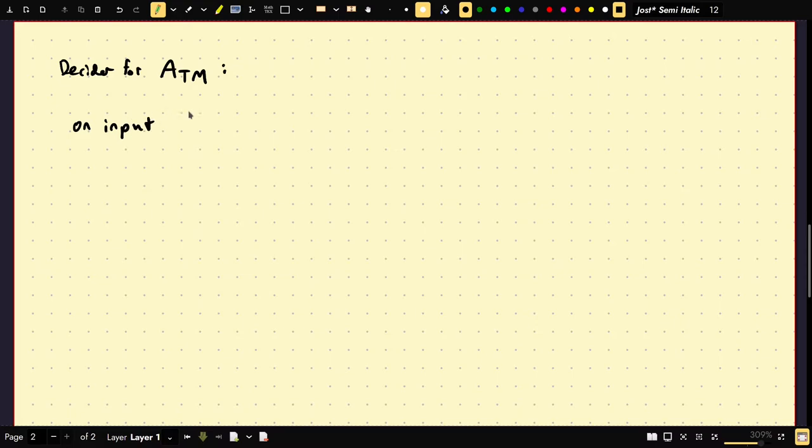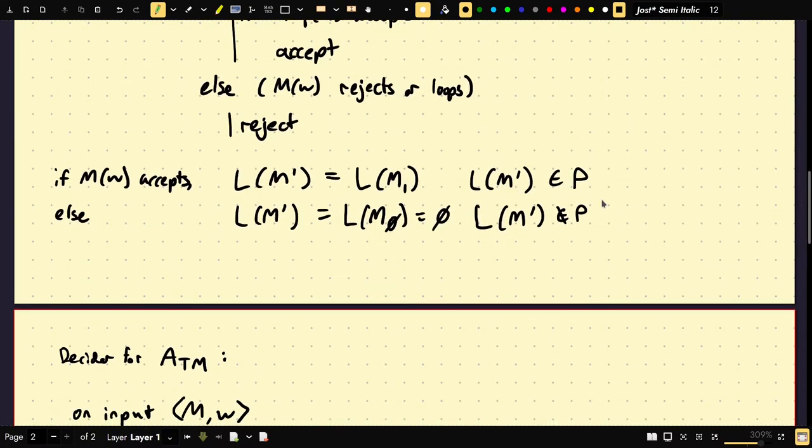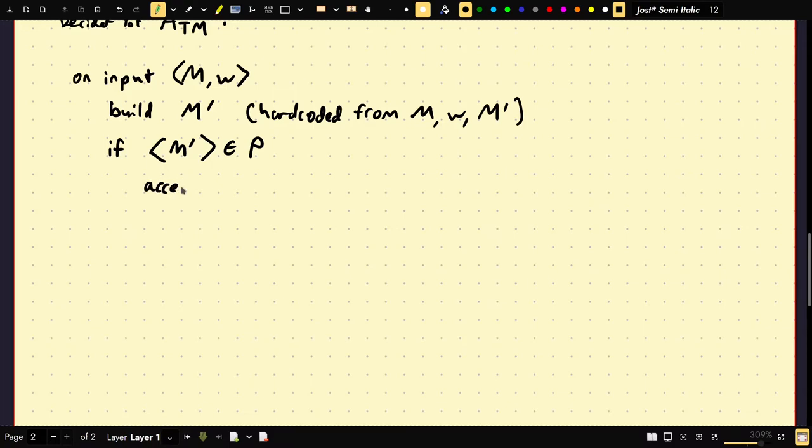So on input M and W, we're going to build M' and recall this is going to be hard-coded from M, W, M'. So now, if M' is in P, so P was decidable, then we knew that we're back to here. We took this accepting branch, so we know that M on W accepts. Else, so this is saying that M' is not in P, we reject.